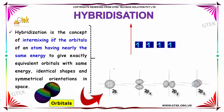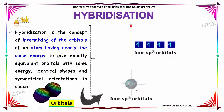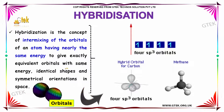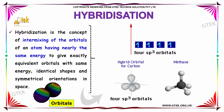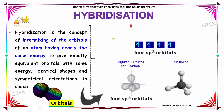Hybridization is a concept of intermixing of the orbitals of an atom having nearly the same energy, to form exactly equivalent orbitals with the same energy, identical shapes, and symmetrical orientation in space. That is referred to as hybridization.